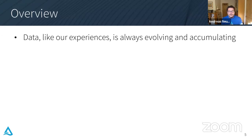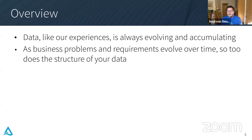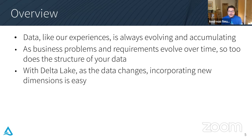So let's go to the topic of today's talk. Data is constantly evolving and constantly changing. It reflects all the things that we experience — the business problems and requirements that we have. As those change, the structure of our data changes. We want to have predictability and be in control of how that happens. Delta Lake has good ways to control how schema changes and also very good ways of enforcing schema.